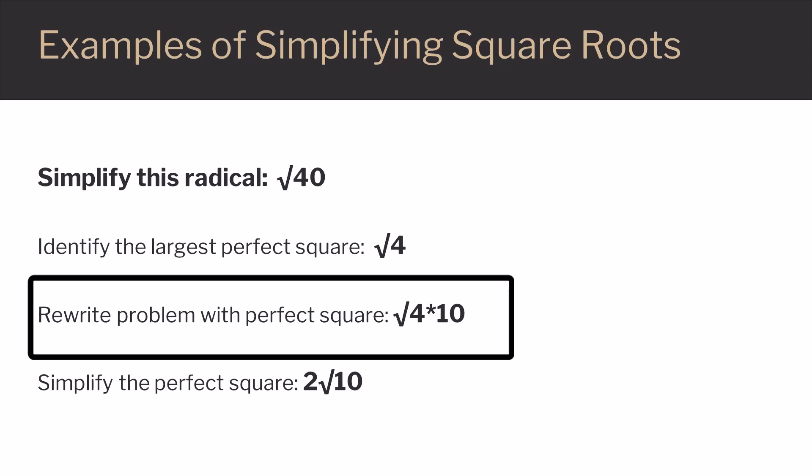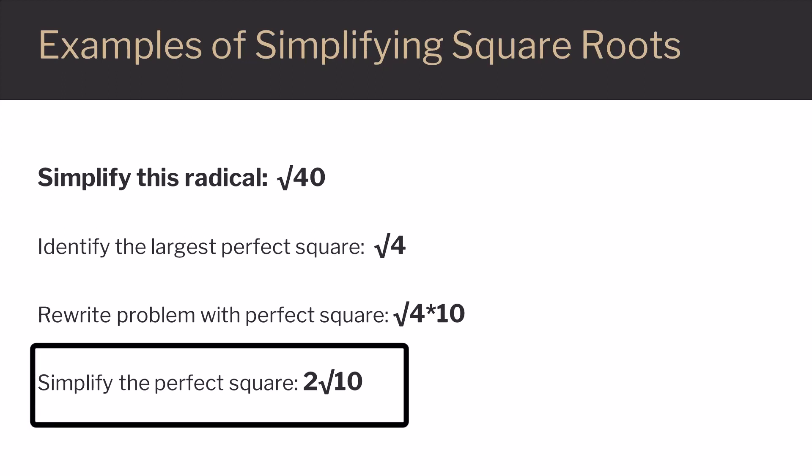We can break this up into the square root of 4 times the square root of 10. Since 4 is a perfect square, we can simplify it to just 2 and remove it from the square root symbol. We still have 10 under the radical, so we end up with 2 times the square root of 10.